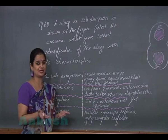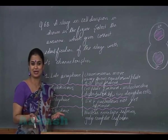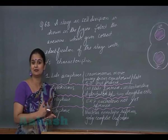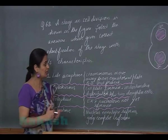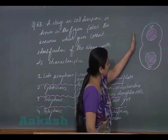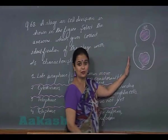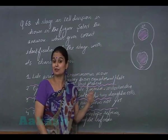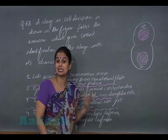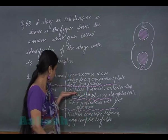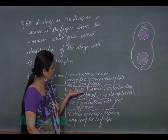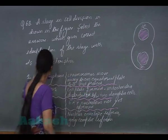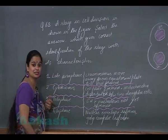The next option is cytokinesis — the division of cytoplasm. In plant cells it occurs by the cell plate method, and in animal cells by the cleavage furrow method. This appears to be an animal cell, so the cleavage method should apply, but the option states that the cell plate is formed, which is incorrect for an animal cell.